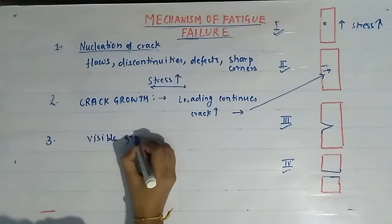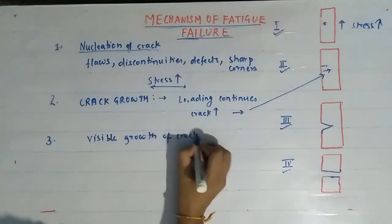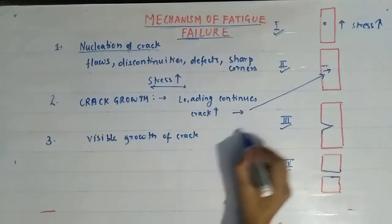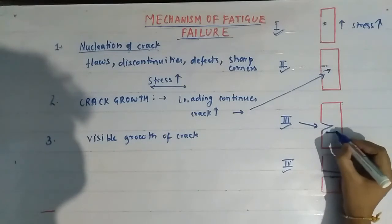Visible growth of crack. As it is clear from stage number three, as shown here, in stage number three the crack is visible and it is propagating in this direction.